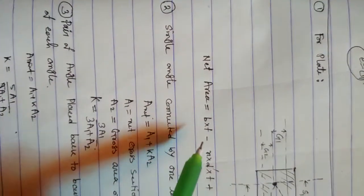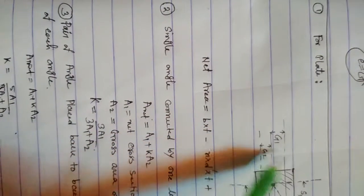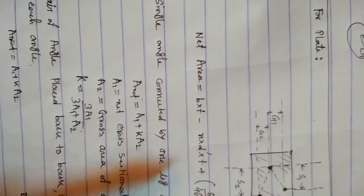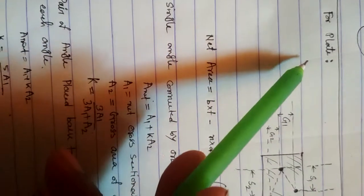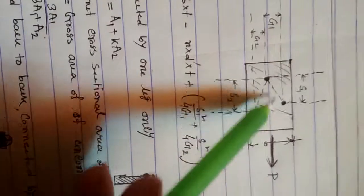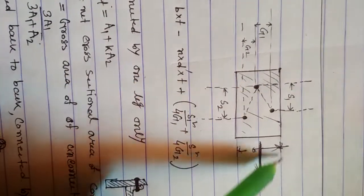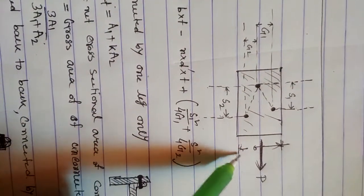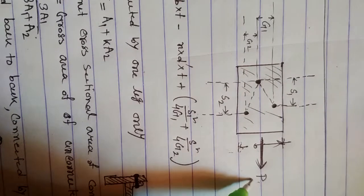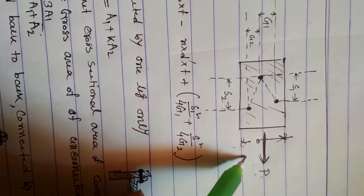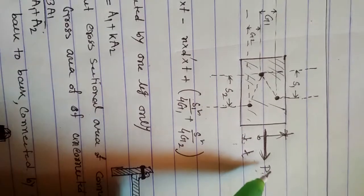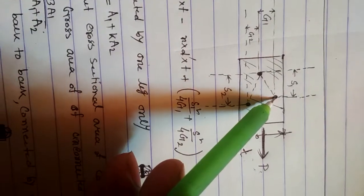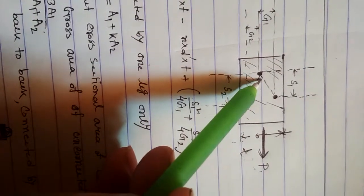I will discuss the net area for plate and angle. First, I will discuss about the plate. This is a plate whose width is b and thickness is t. One force is acting here P, and here is a bolt — this one, this one, and this one.